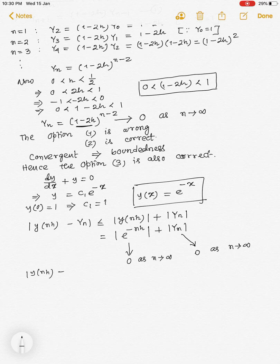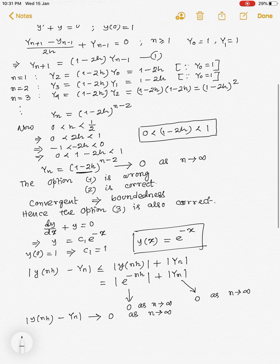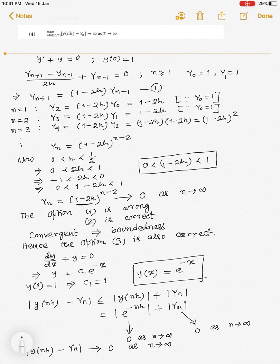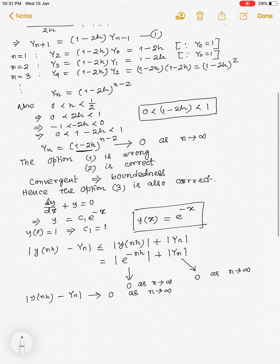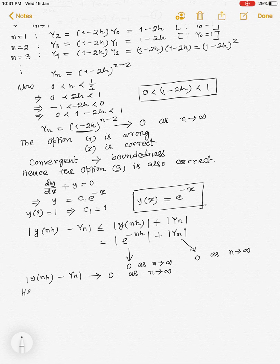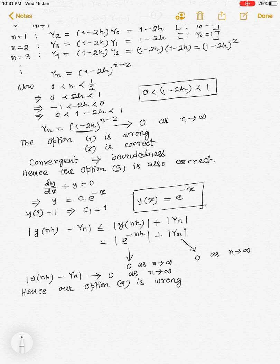Hence, this |y(nh) - yₙ| tends to 0 as n tends to infinity. But in option 4, we are given that |y(nh) - yₙ| tends to infinity as n tends to infinity. Hence, our option 4 is wrong.